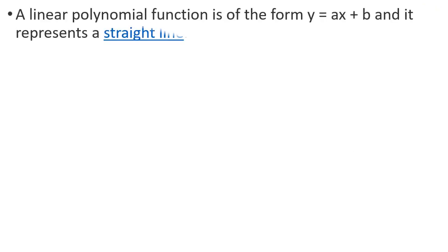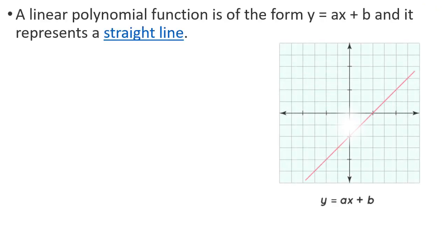First, a linear polynomial function is of the form y equals ax plus b and it represents a straight line. For example, x plus 1 is a linear polynomial. The graph of a linear polynomial function is a straight line.